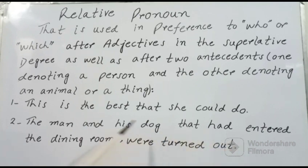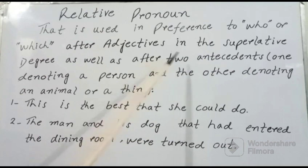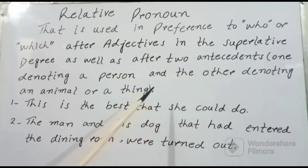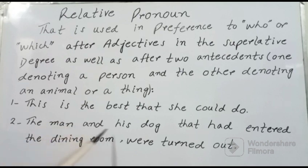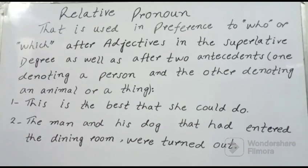Example for two antecedents: 'The man and his dog that had entered the dining room were turned out.' یہاں دو antecedents ہیں: 'man' اور 'his dog'. دو antecedents کے بعد بھی 'that' کا استعمال کیا جاتا ہے. تو یہ تھا ہمارا آج کا relative pronouns کا topic، امید ہے آپ کو اچھی طرح سمجھ آگئی ہوگی.